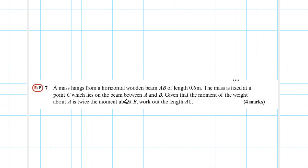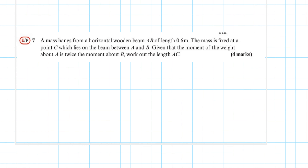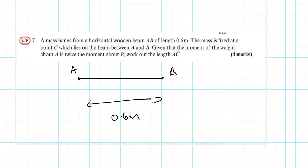Question 7. A mass hangs from a horizontal wooden beam AB of length 0.6 metres. The mass is fixed at point C, which lies on the beam between A and B. Given that the moment of the weight about A is twice the moment about B, work out the length of AC. In these questions, the first thing to do is draw out the information.